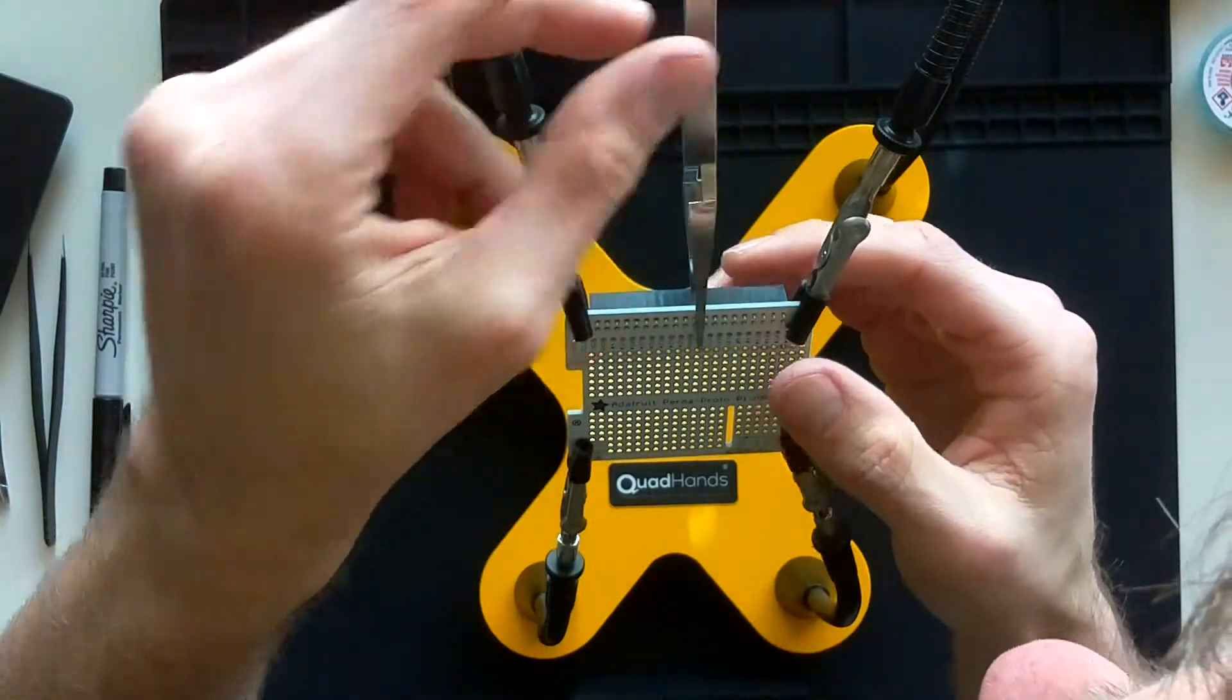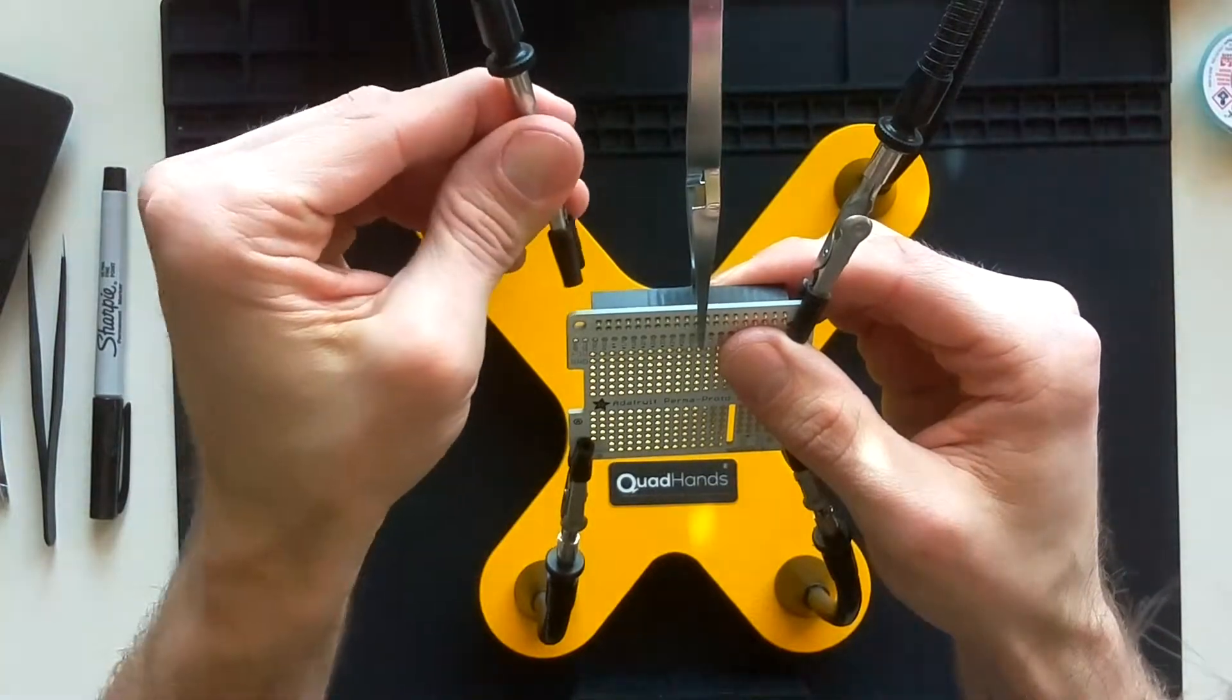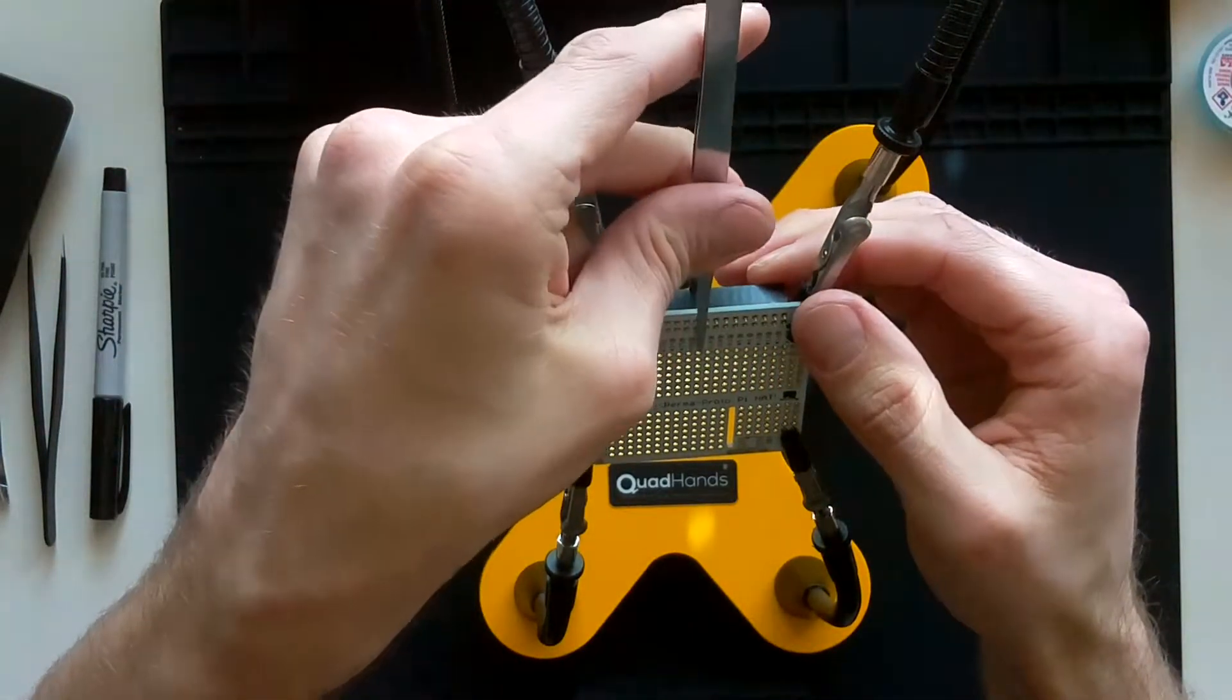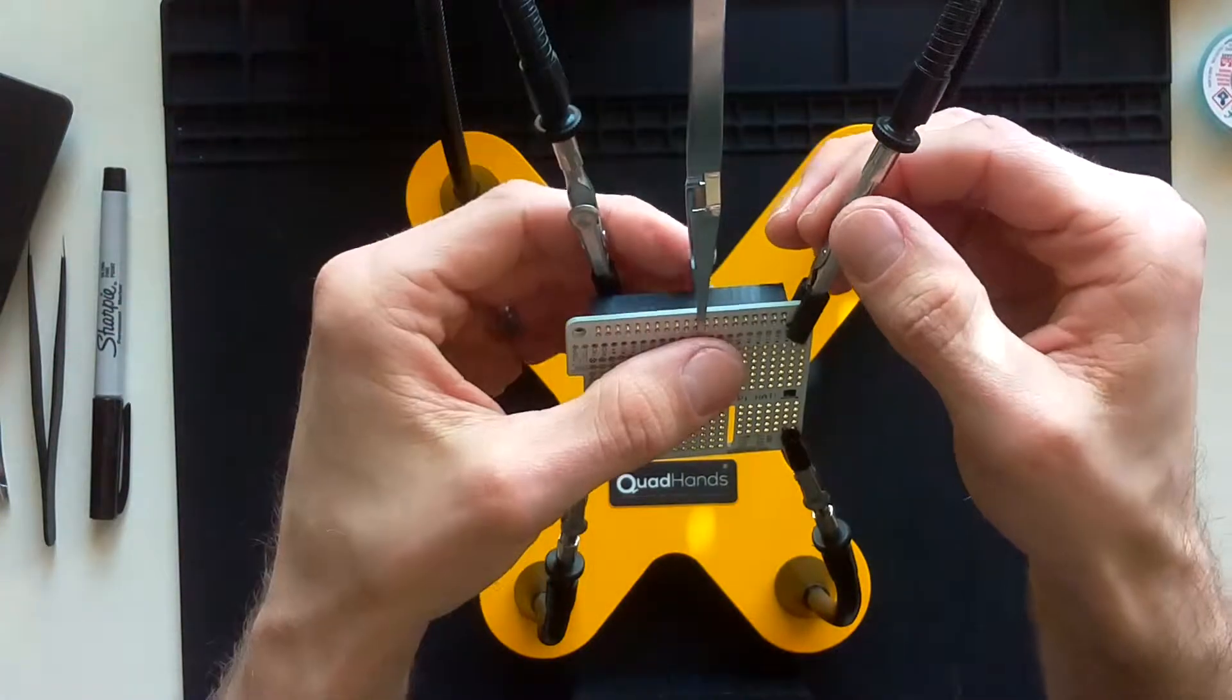I found that my tweezers here were not holding the header flush against the board, so I decided to use two of my hands to support the header from underneath.